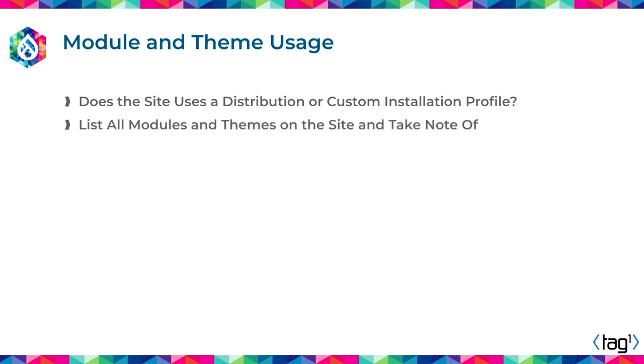Make a list of all the modules and themes that your site uses and take note if each is core, contributed, or custom, and whether they are enabled or disabled.